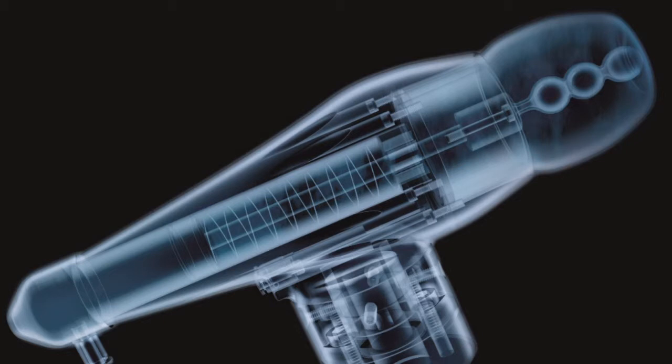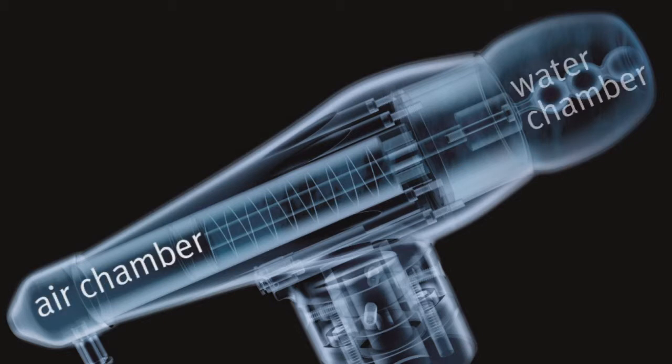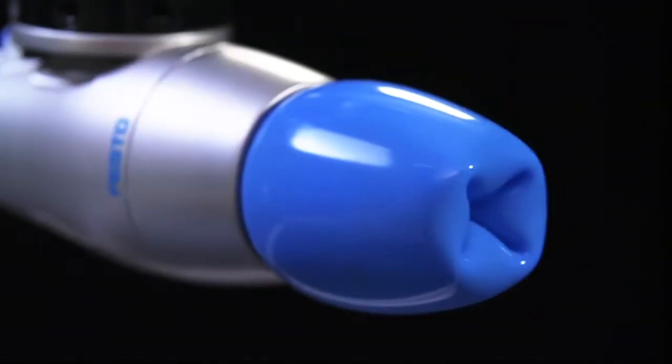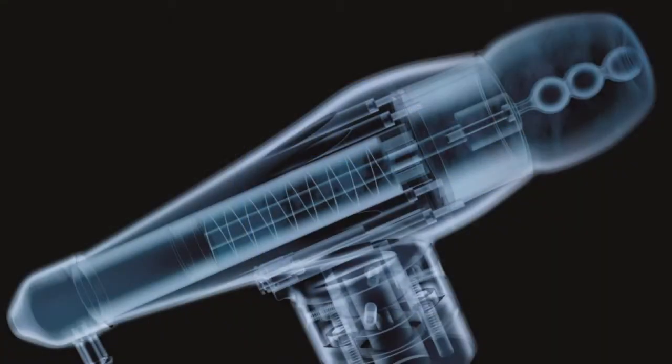The gripper consists of two chambers that are connected to each other. One chamber is the blue silicone cap at the front which is filled with water. The other chamber can be filled with compressed air.